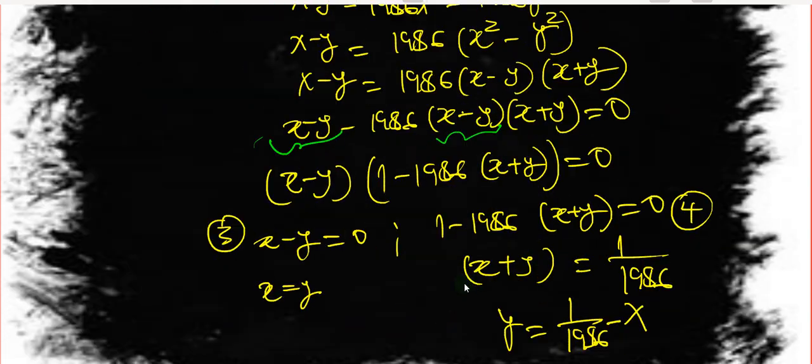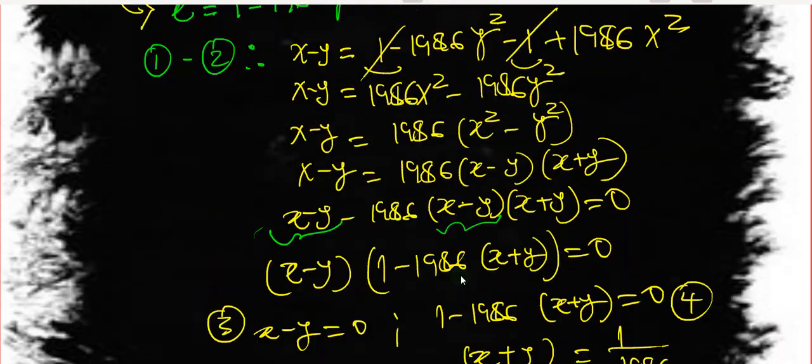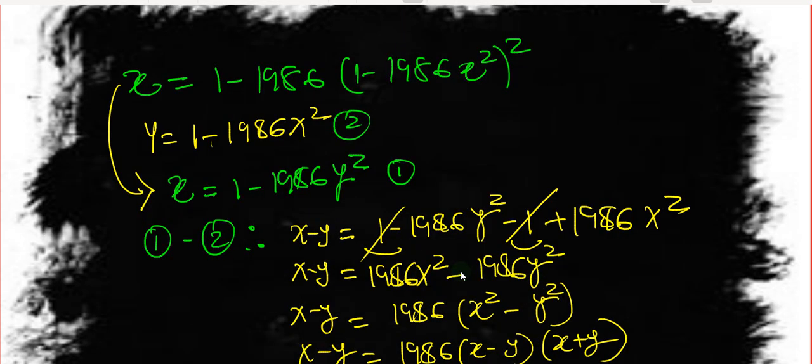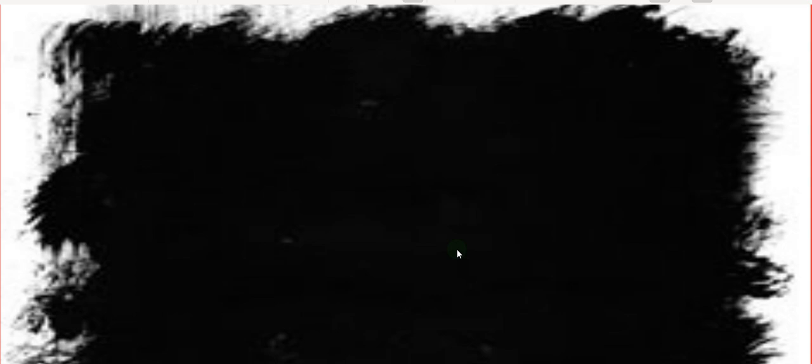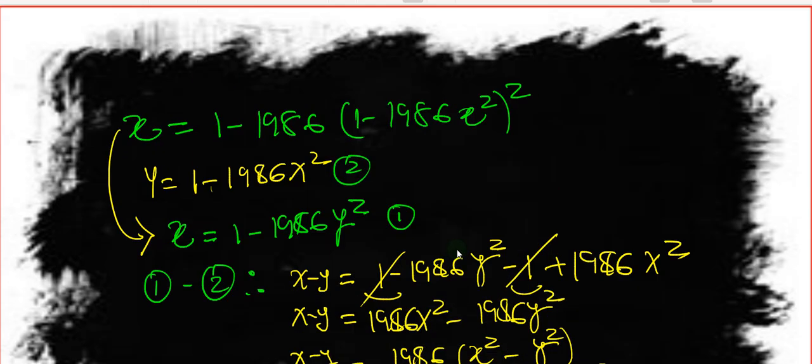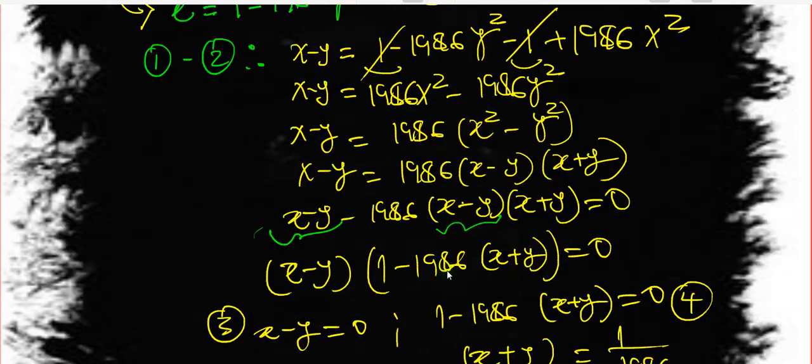Since x equals y from equation 3, we substitute into the second equation. Our second equation is x equals 1 minus 1986 y squared. Replacing y with x, we get x equals 1 minus 1986 x squared.